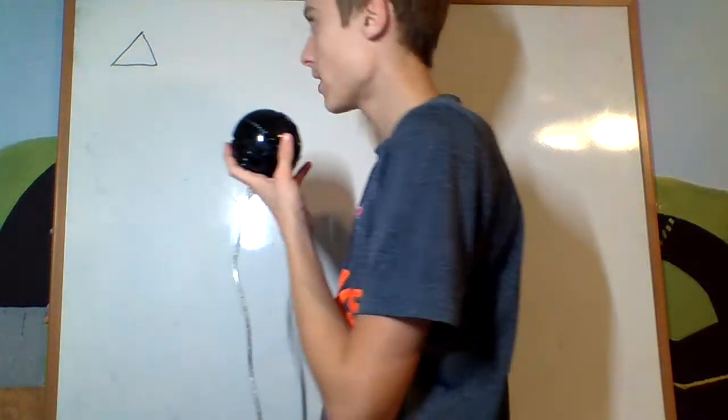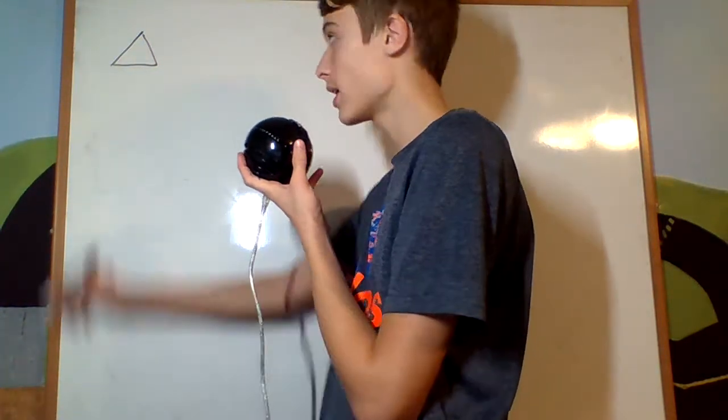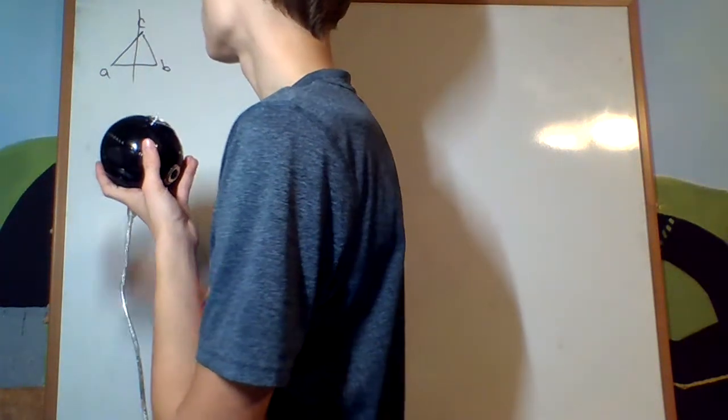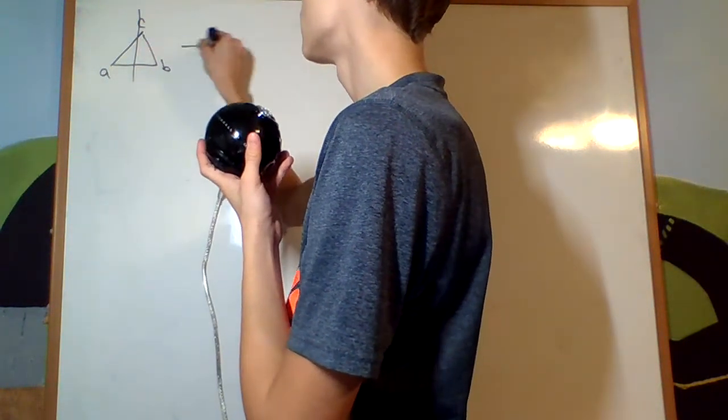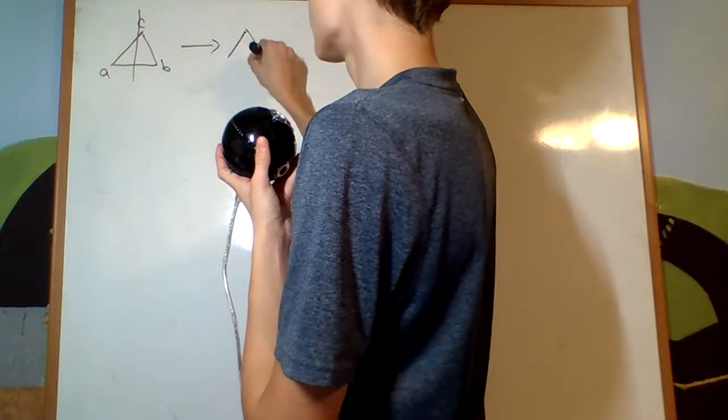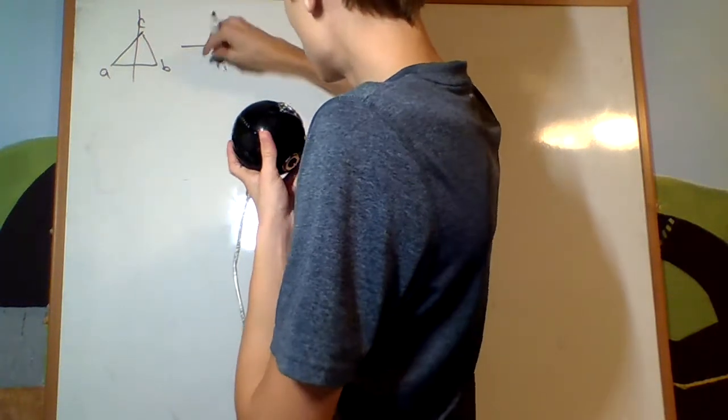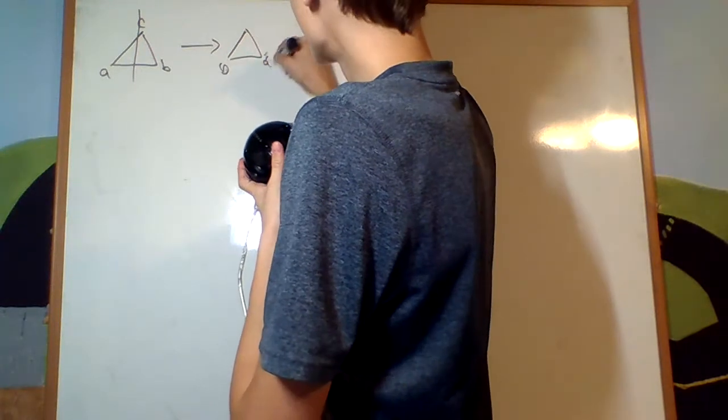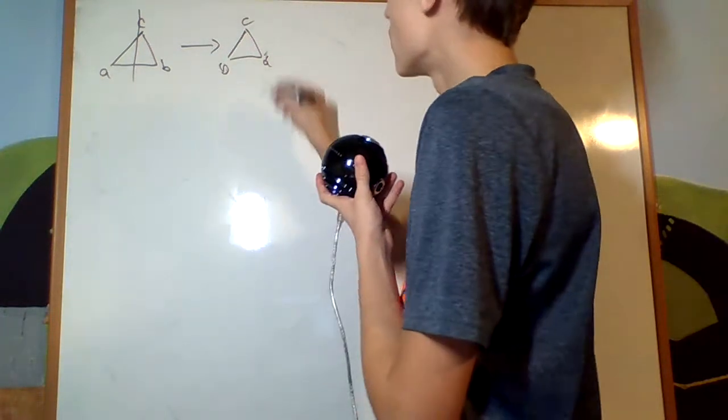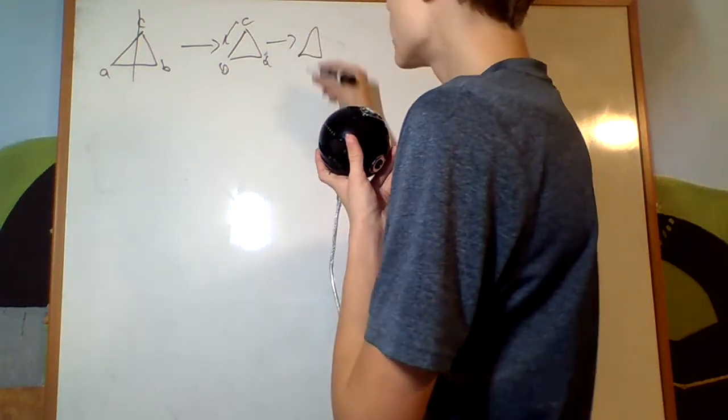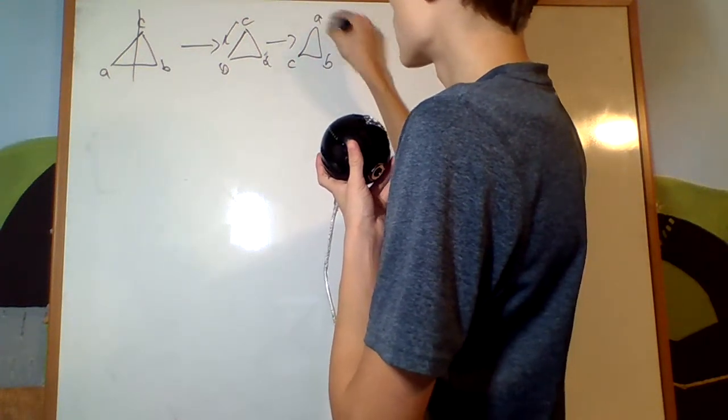If I have the triangle group we discussed last time, I start off with the triangle that I flip along C. Then I get out of it the triangle B, A, C, and I then rotate it like that. So, I get the triangle C, B, A.